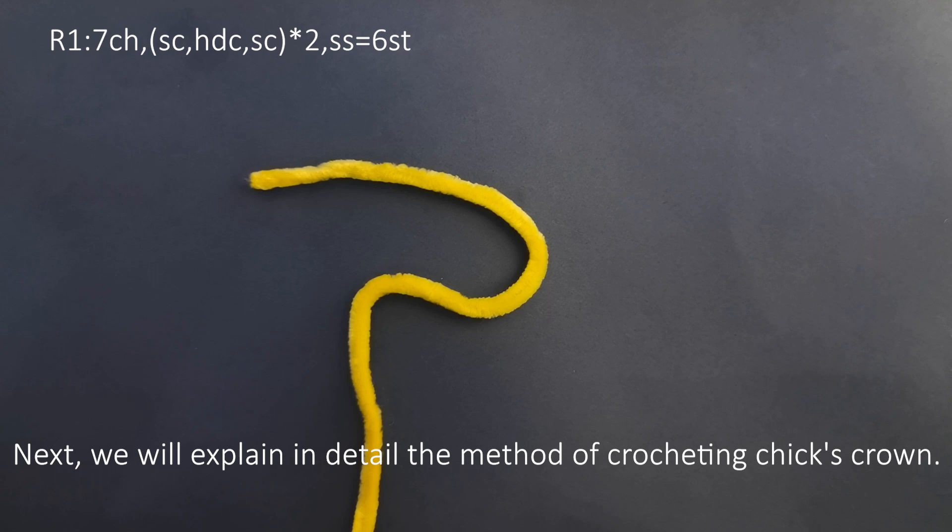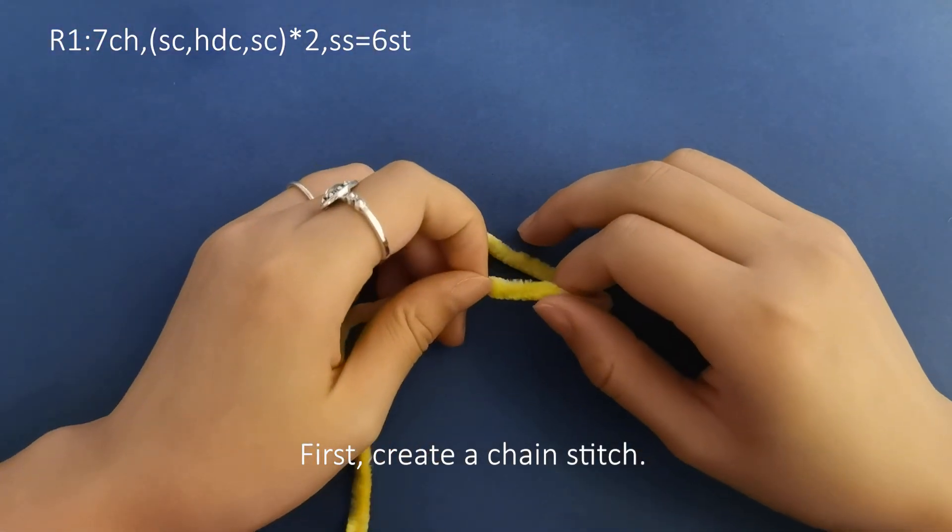Next, we will explain in detail the method of crocheting the chick's crown. First, create a chain stitch.